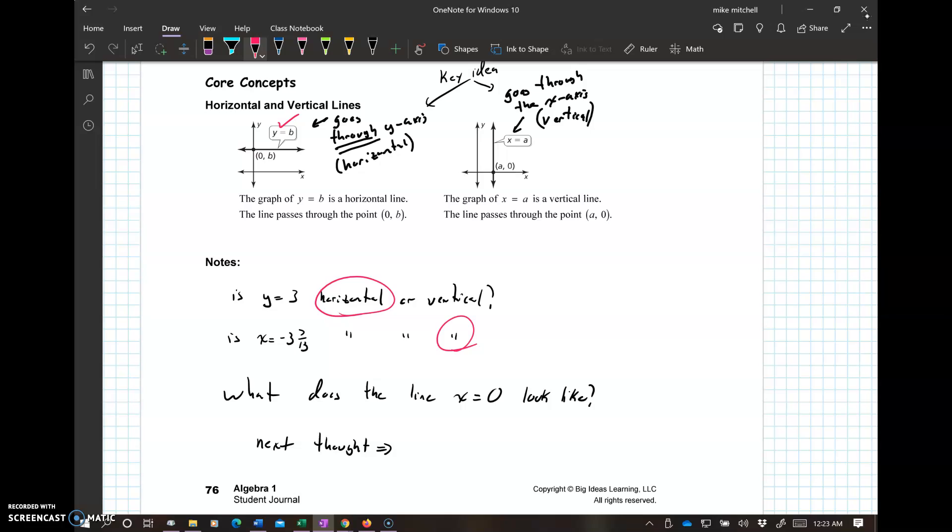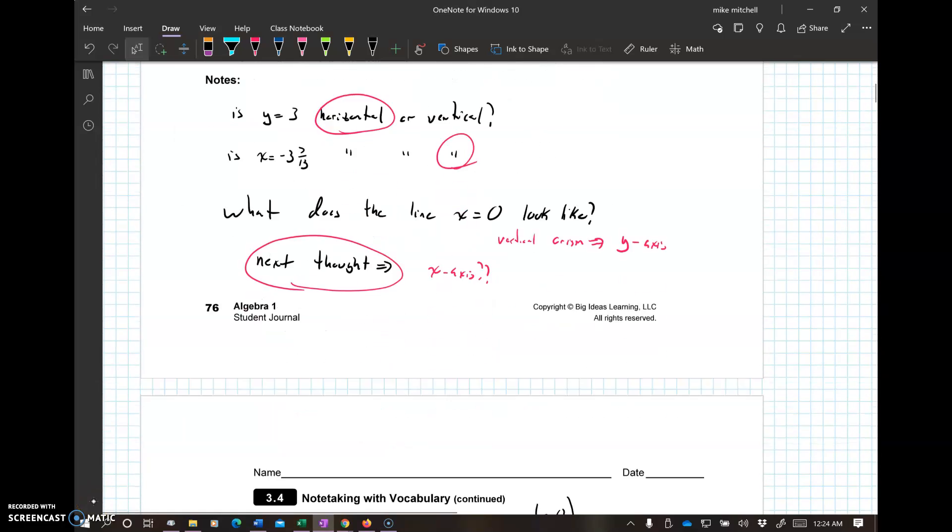What does the line x equals 0 look like? Well, x equals 0, that's going to be a vertical line through the origin, which means it's going to look like the y-axis. So, that's what x equals 0. Well, if x equals 0 looks like the y-axis, the next thought, what's going to look like the x-axis? Think about it. Write it down.